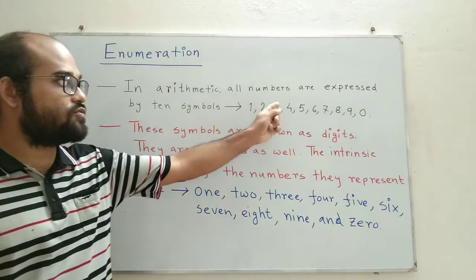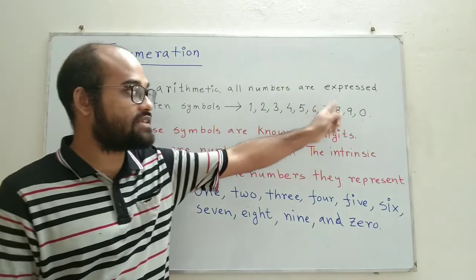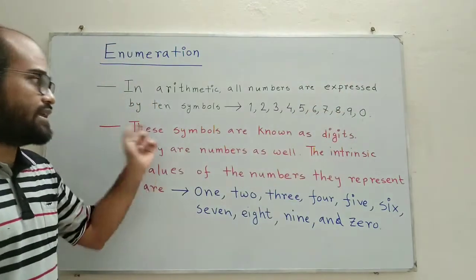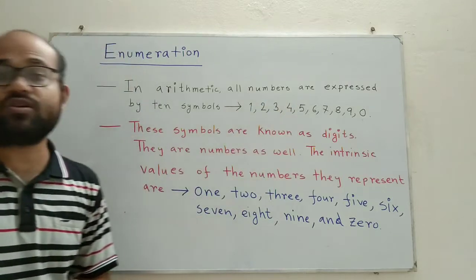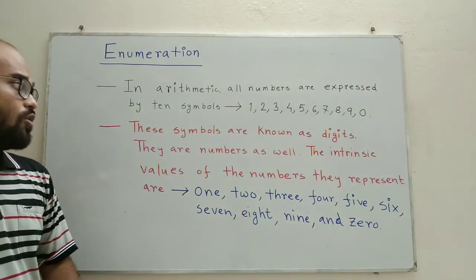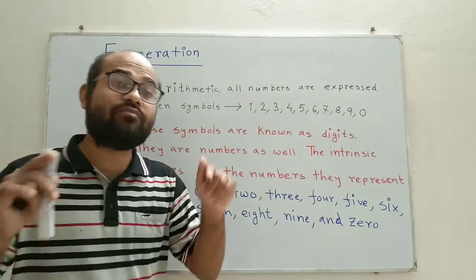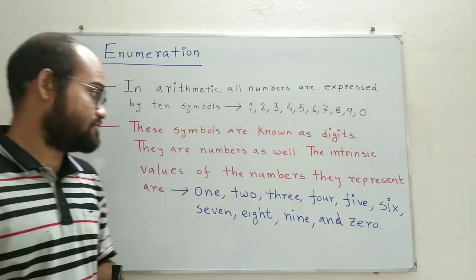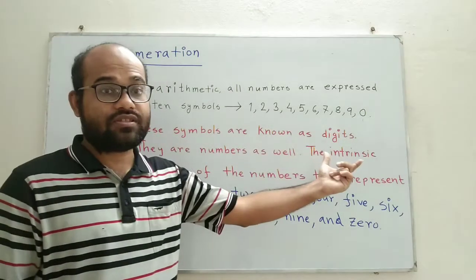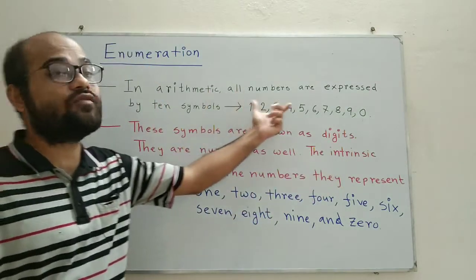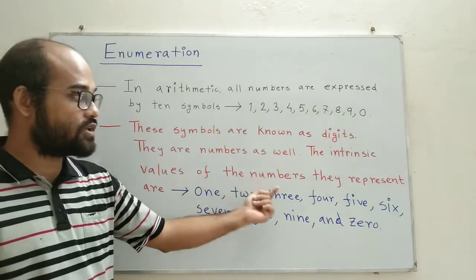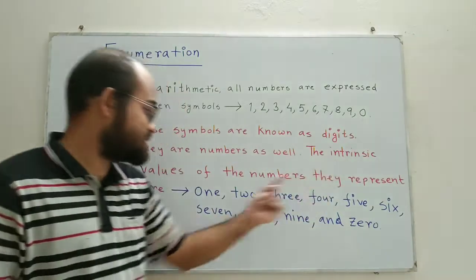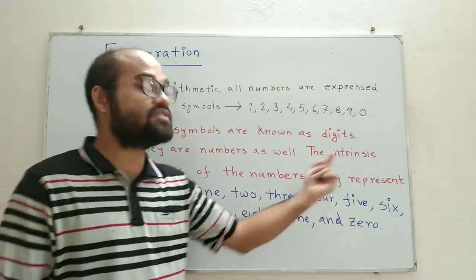What are the 10 symbols being used? They are 1, 2, 3, 4, 5, 6, 7, 8, 9, and 0. As you can see, as it is written on the board, these 10 symbols are known as digits. All of these digits are numbers on their own right, and the intrinsic values of the numbers they represent are one, two, three, four, five, six, seven, eight, nine, and zero.